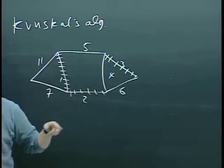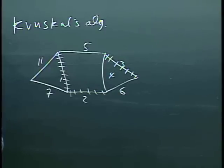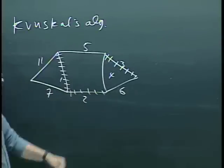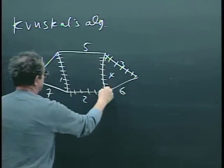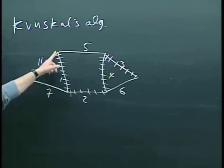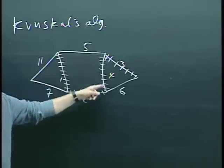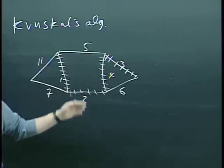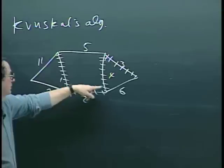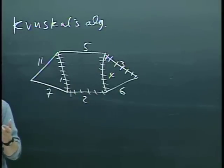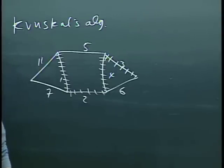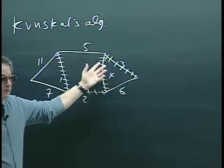Now notice that unlike Prim's algorithm — where what you've selected is always connected, you're growing from some set of nodes always to another node connected to it — here, at any given point in time, what you've selected so far could be disconnected, as we see in this example. Then the next one you take is 4 because it's the next biggest, and it doesn't create a cycle. Then the next one you consider is 5, but 5 would create a cycle with the ones we've taken so far. A cycle can be of any length — it's not just a square or a triangle. It's simply a set of edges which you can walk around continuously and get back to where you started. So 5 is not taken.